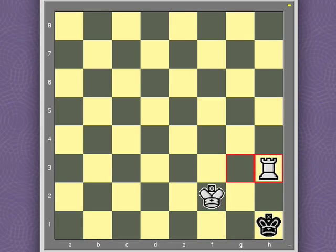And rook to h3, checkmate. As you notice, this ending position, the white king guards the squares on the g file, g1, g2, and g3. And the rook checks from h3 and guards the entire h file. That's checkmate.